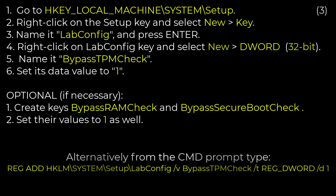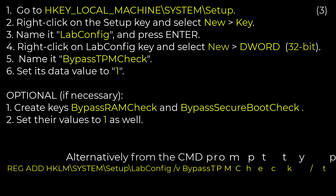Right-click on your new LabConfig key and select New, then DWORD 32-bit. Name it BypassTPMCheck and set its data value to 1.